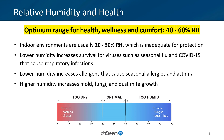Lower RH increases the survival of viruses such as seasonal flu and COVID-19 that cause respiratory infections. Lower RH also increases allergens that cause seasonal allergies and asthma. It is also important that RH is not too high. RH above 60% increases the likelihood of mold, fungi, and dust mite growth, which can all have a negative effect on human health.